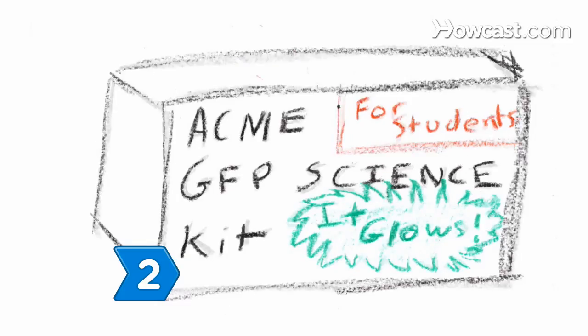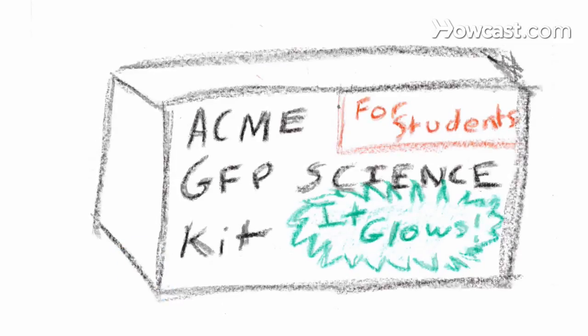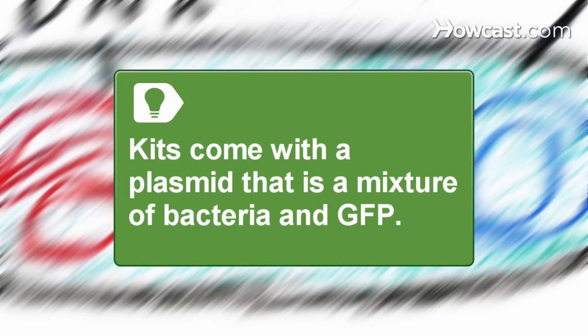Step 2. Use a GFP student science project kit available through Educational Science Company. Kits come with a plasmid that is a mixture of bacteria and GFP, so caution and handling is important.